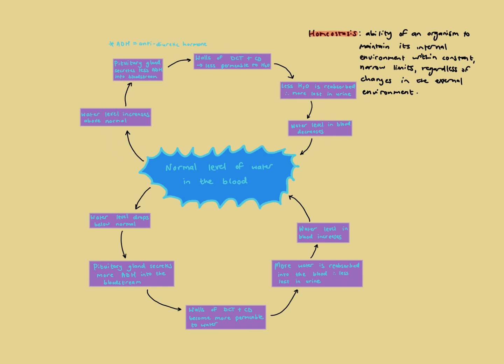The opposite applies on a cold day. Instead of the water level dropping, the water level increases above normal. Instead of secreting more ADH, the pituitary gland secretes less ADH into the blood. The walls of the distal convoluted tubule and collecting duct become less permeable to water — the channels close, water gets stuck in the tubule, and less water is reabsorbed by the blood. More water is lost in urine, producing a very dilute urine that gets rid of the excess water. So if you're not sweating or you're drinking a lot, you'll produce more dilute urine, and the water level in the blood decreases back to normal.